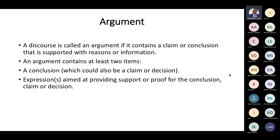Those are the two components of an argument. An argument contains at least two items: a conclusion, which could also be a claim or decision, and expressions aimed at providing support or proof for the conclusion, claim, or decision. Conclusion, claim, and decision are all the same — they all pass through the same process. They need to be supported with reasons, information, or premises, and constitute the same sort of end in the argumentative process.